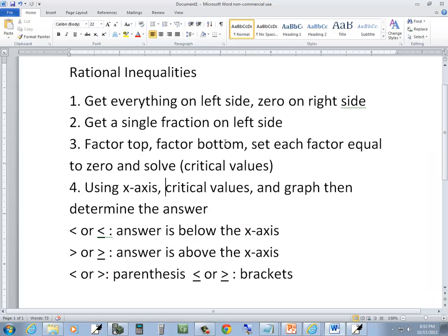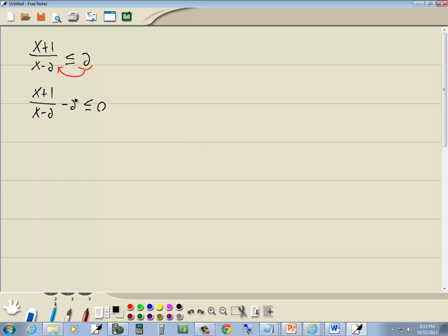Now step 2, get a single fraction on the left side. We're going to take the number to the side, multiply it times our denominator. So we'll take negative 2 times x minus 2 and then we'll add our numerator. So we'll add the x plus 1. And then our denominator stays the same.